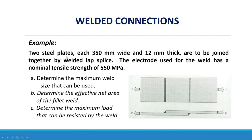Next example: Two steel plates, each 350mm wide and 12mm thick, are to be joined together by a welded lap splice. The electrode used for the weld has a nominal tensile strength of 550 MPa. Determine: A) the maximum weld size that can be used; B) the effective net area of the fillet weld; and C) the maximum load that can be resisted by the weld.